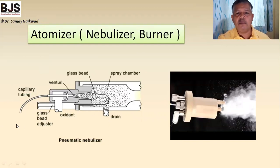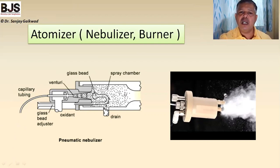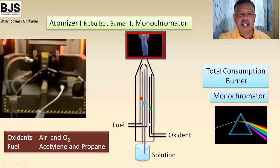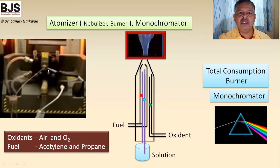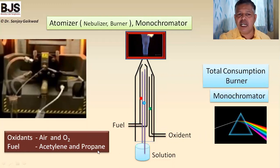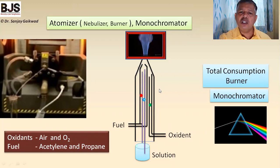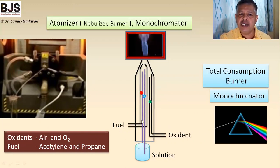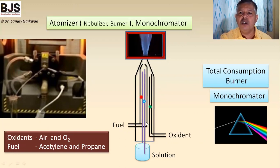The function of the atomizer is to convert the aspirated solution into a very fine fog — very small droplets — which enters directly into the flame. The oxidant may be air or oxygen, and the fuel may be acetylene, LPG such as propane, or nitrous oxide when hard metals need to be detected. The total consumption burner passes fuel and oxidant directly to the burner. Waste gases from the flame are removed using an exhaust chimney or exhaust fan.